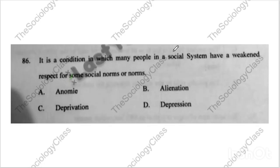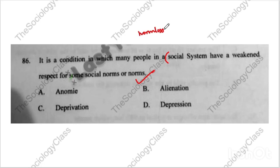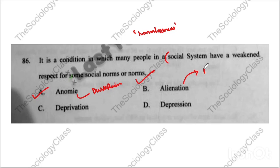Question number eighty-six: 'It is a condition in which many people in a social system have a weakened respect for social norms.' Normlessness — the weakening of norms. The correct answer is anomie. Anomie is discussed by Durkheim. Alienation is discussed by Marx.